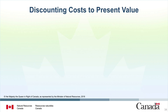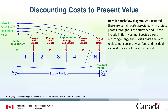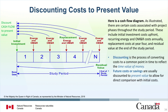Let's start by learning how to discount costs to present value. As you can see in the cash flow diagram, there are costs associated with particular project phases throughout the study period: initial investment costs upfront, recurring energy and OM&R costs annually, replacement costs at year 4, and residual value at the end of the study period. Before we can compare or sum costs occurring at different points over the study period, we must convert all costs to a common point in time to reflect the time value of money. This conversion process is called discounting. Future costs or savings are discounted to present value so they can be directly compared with initial investment costs.